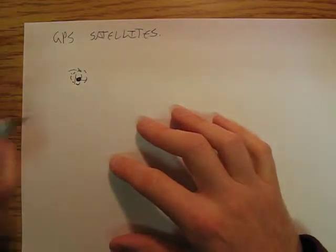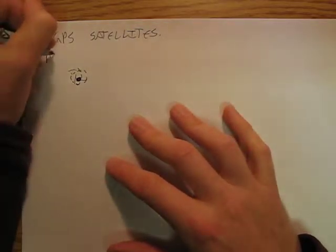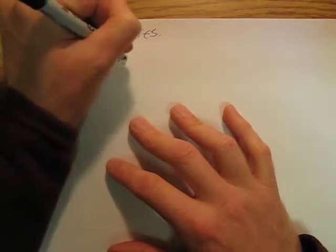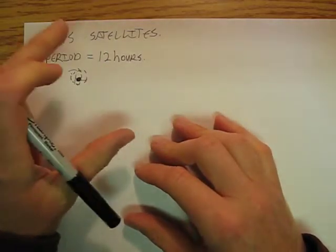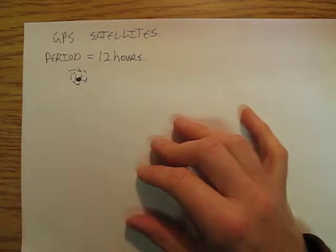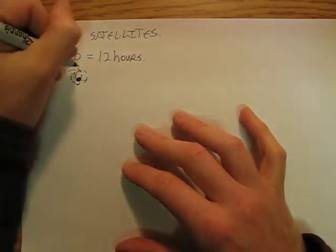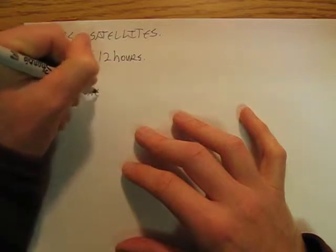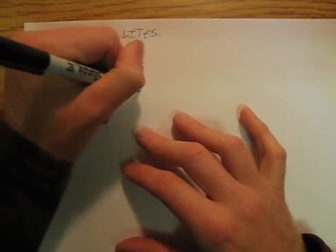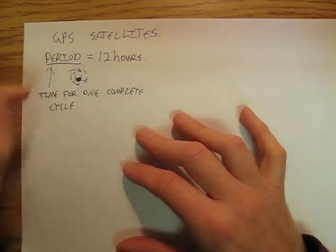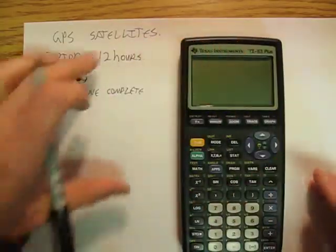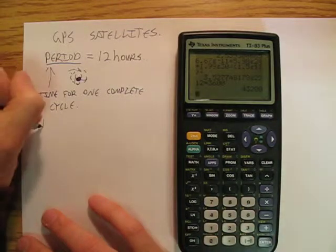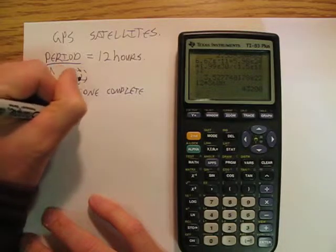What they decided upon was the period of the satellites — they want it to be 12 hours. So basically each satellite orbits twice per day. Period is the time for one complete cycle. We're going to convert that right away: 12 hours times 3600 seconds per hour gives us T = 4.32 times 10 to the 4th seconds.